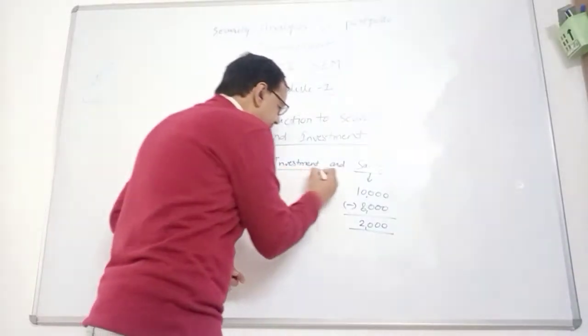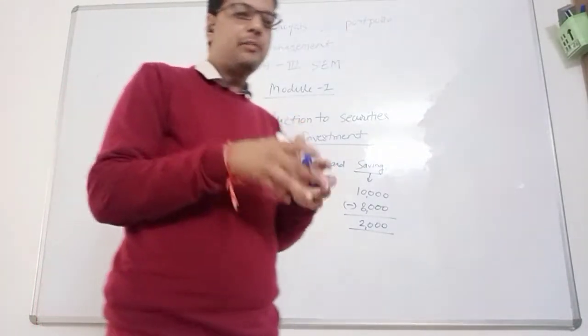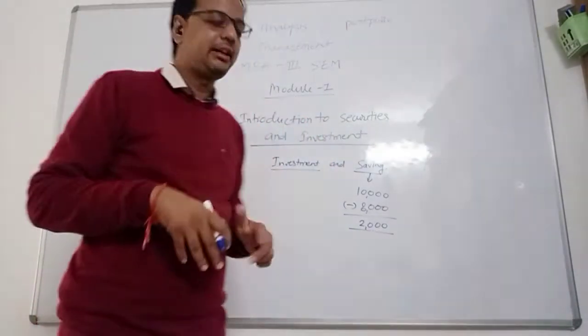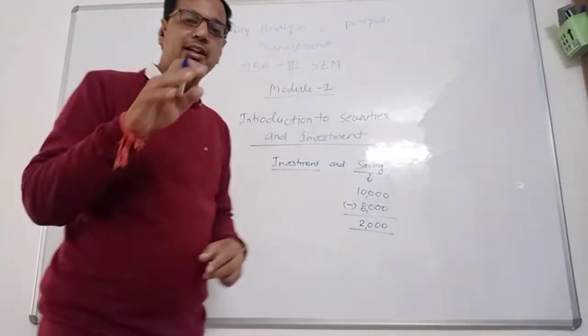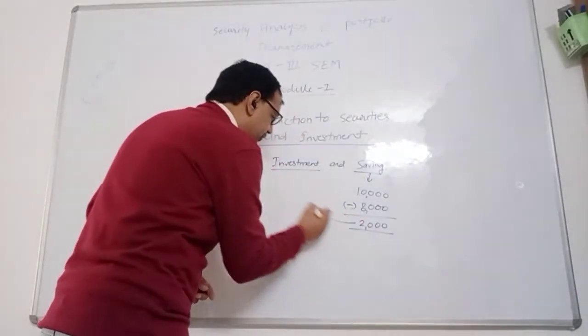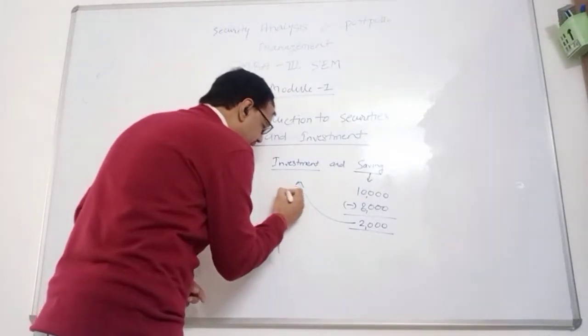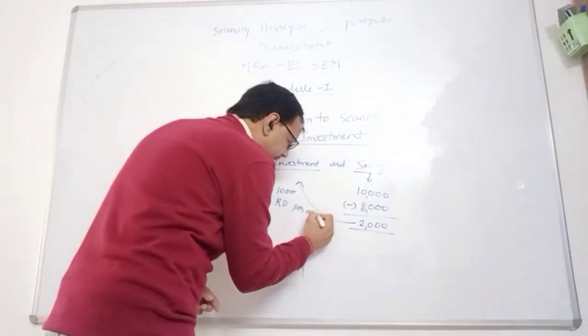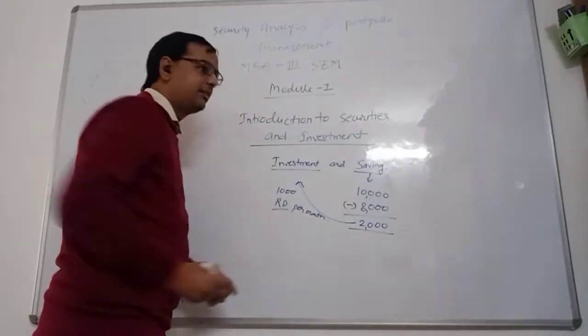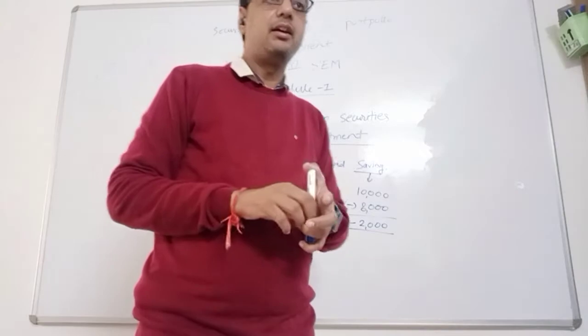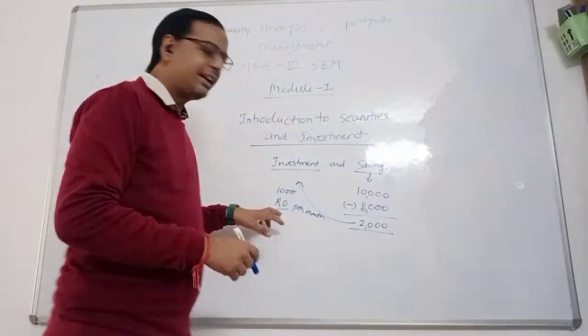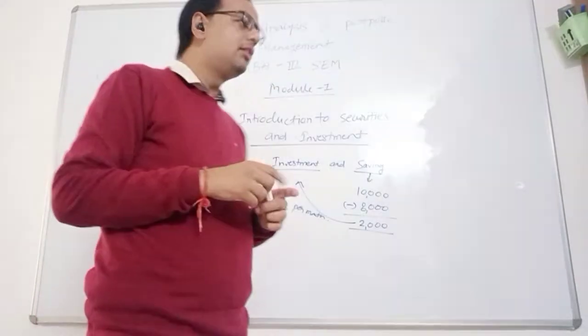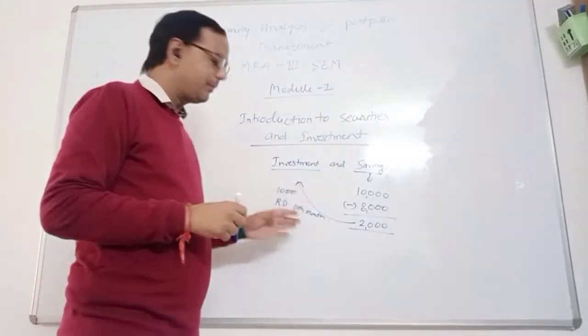Investment is out of saving, how much amount you have invested to earn more money from this saving. This is investment. Out of this you have invested Rs. 1,000 per month in recurring deposit. You have earned interest from R.D.